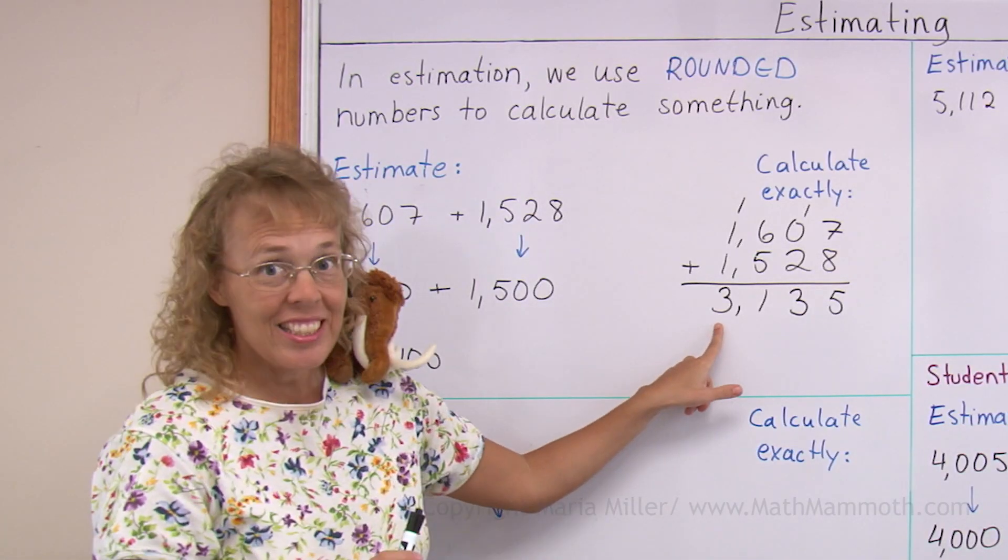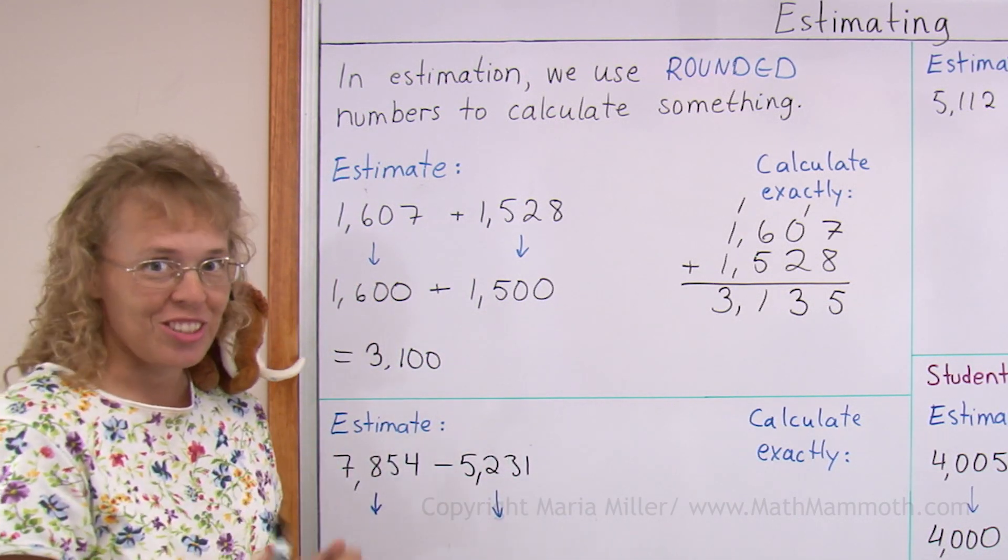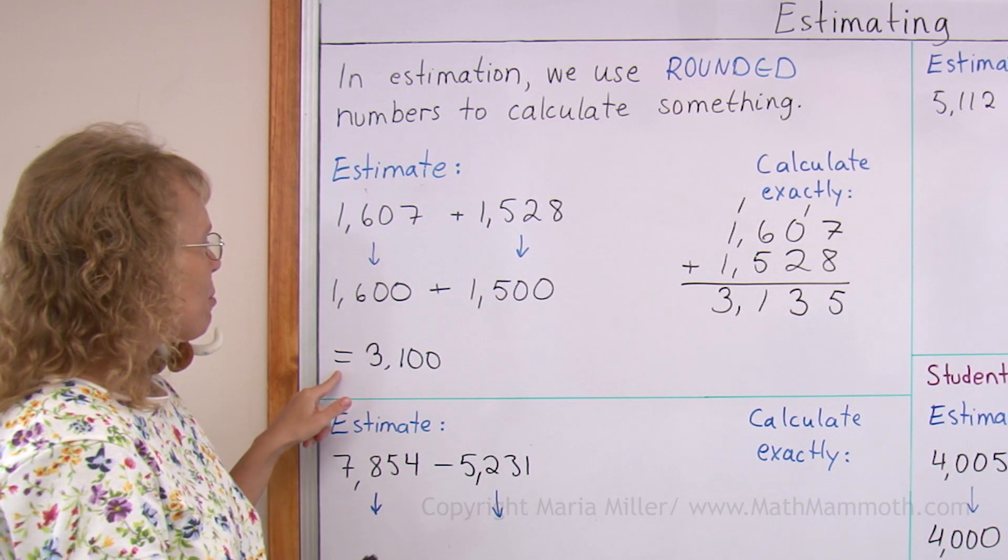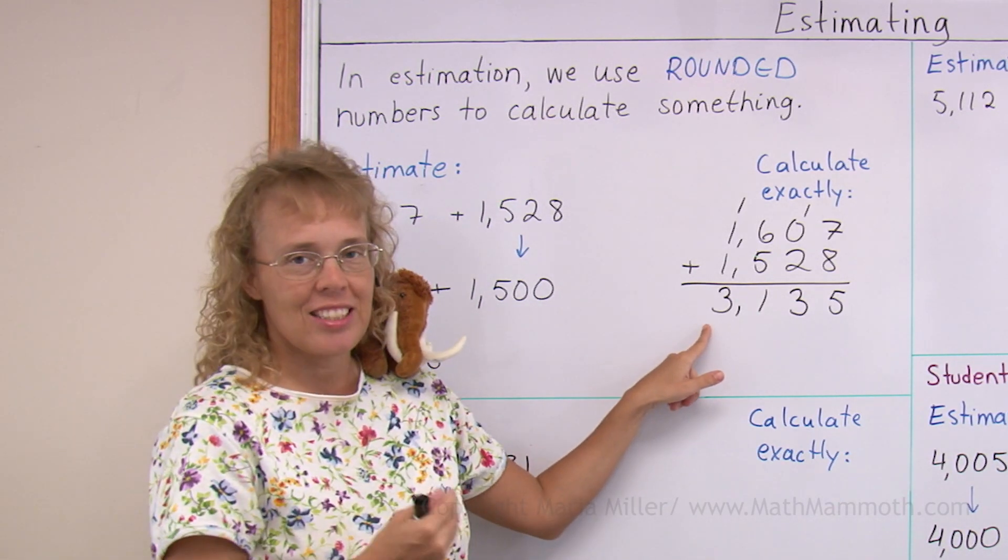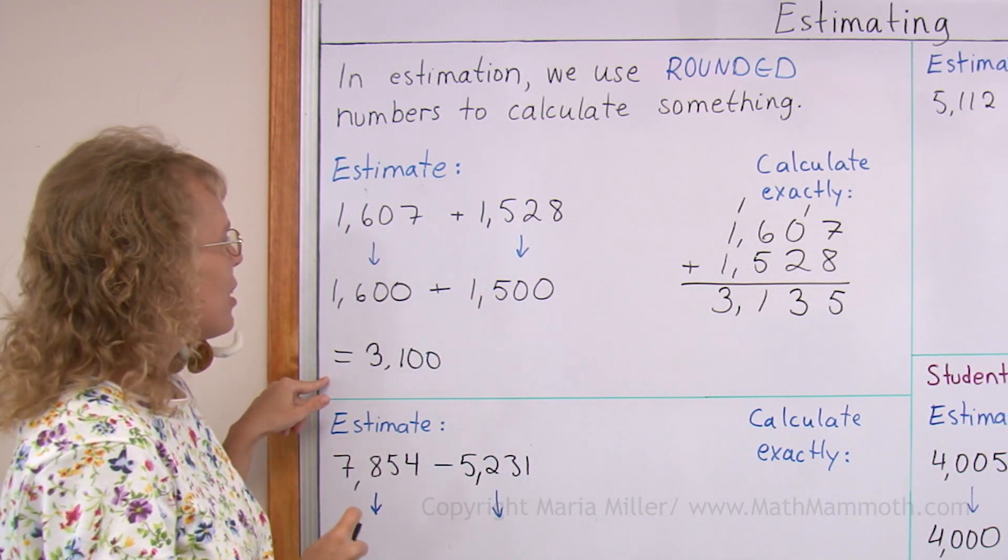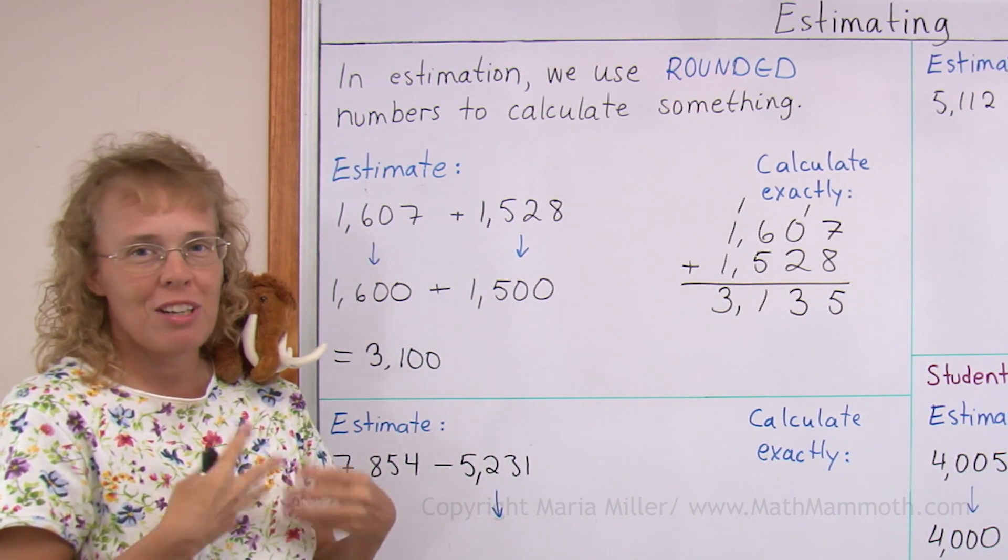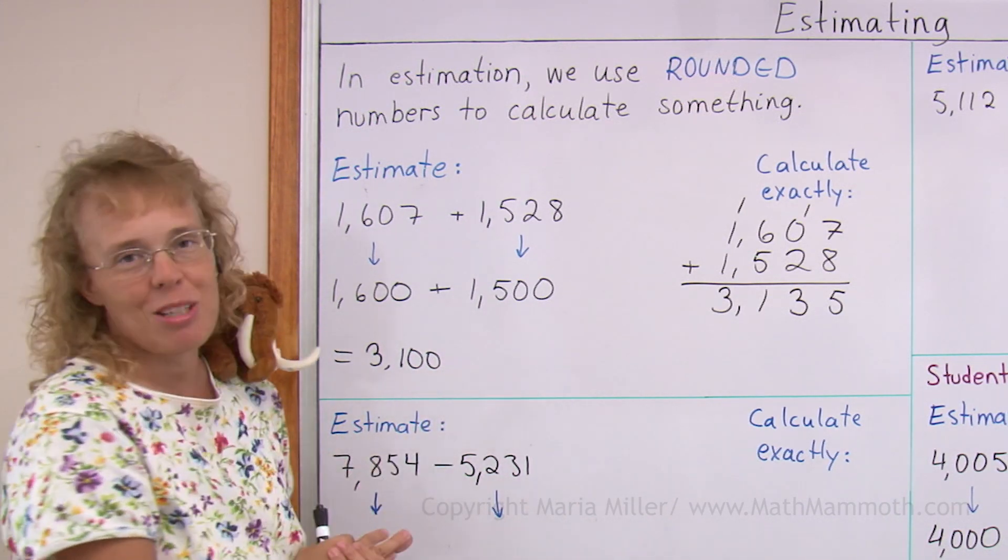And this answer is close to our estimate, so that is good. That is one reason why we estimate is to check that the exact calculation hasn't gone wrong. And the other reason for estimating would be if you're in a store, for example, and you don't have a calculator, you cannot calculate exactly, then you can use rounded numbers to estimate.